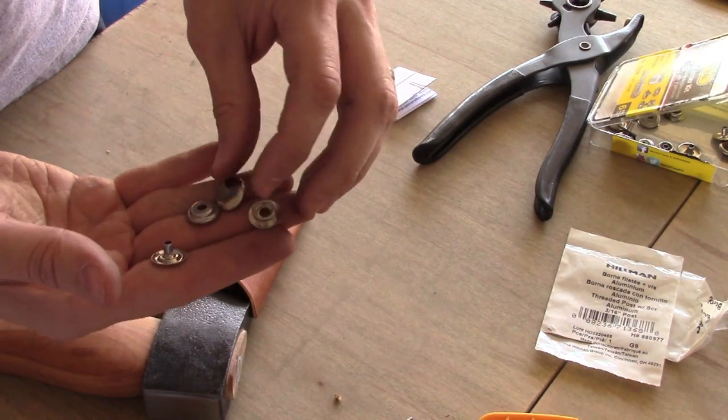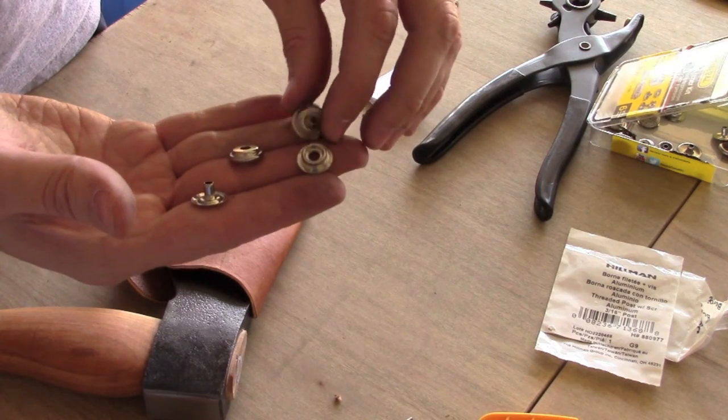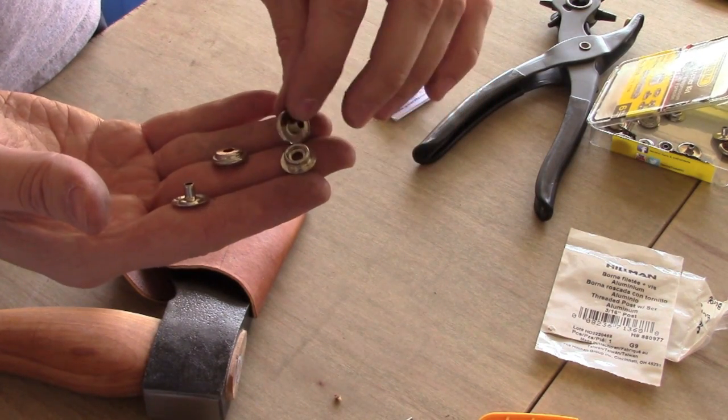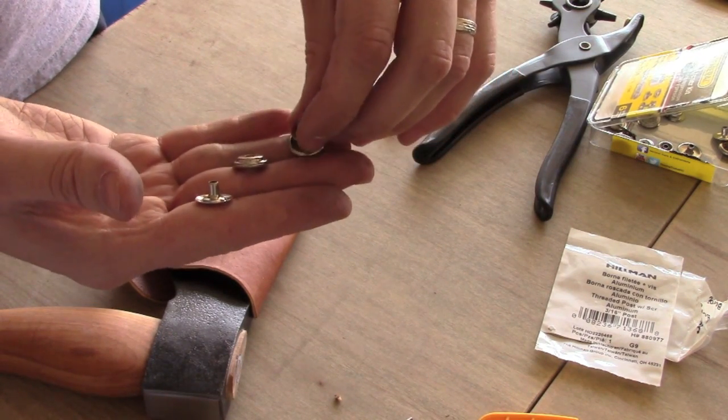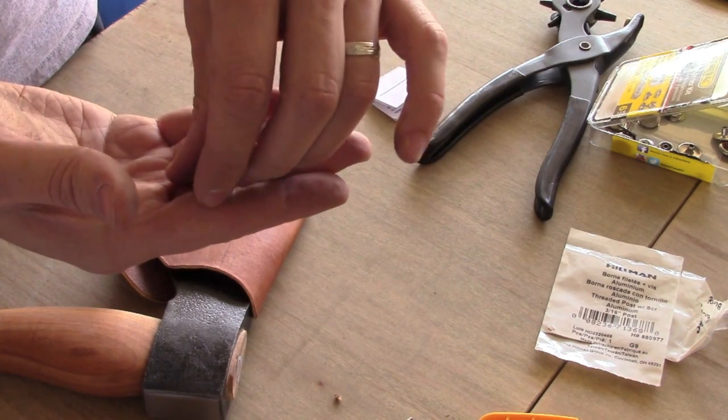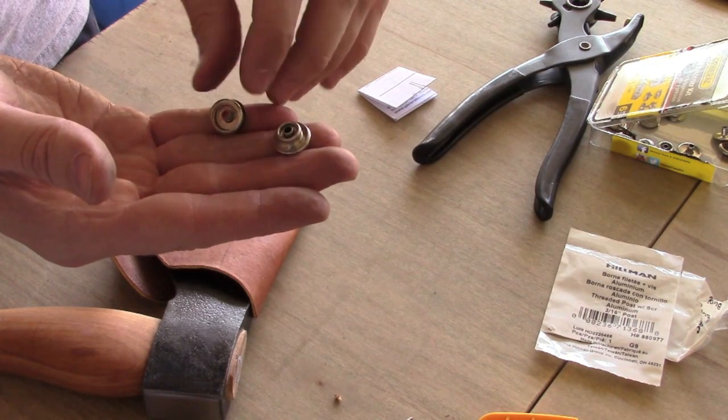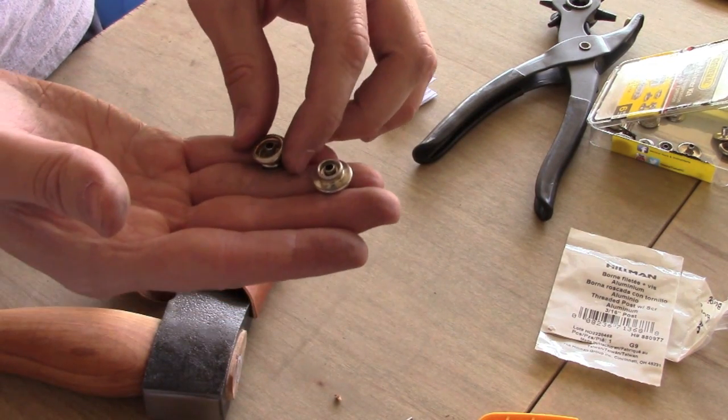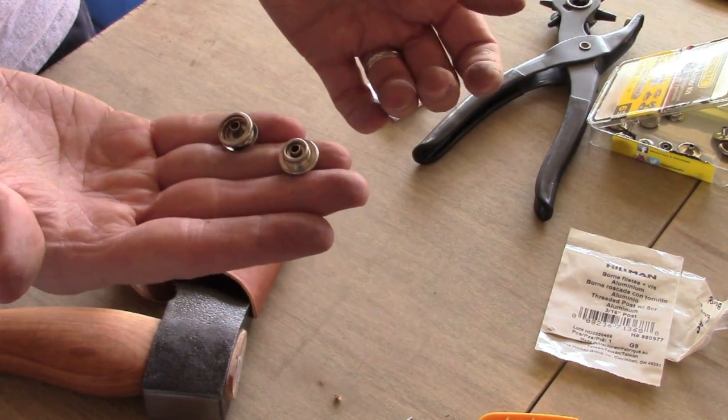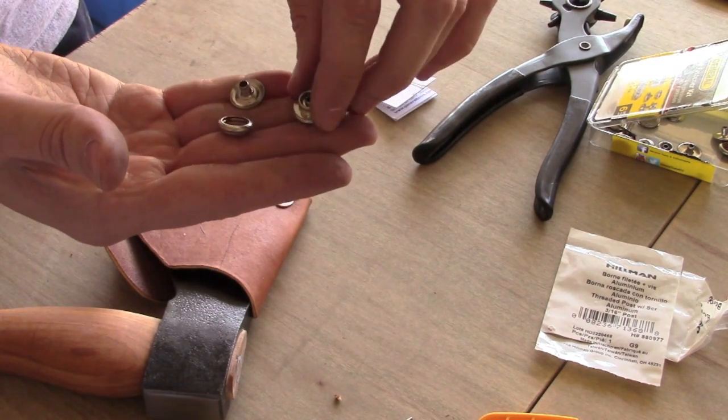You have four parts on setting a snap. There's that top button, the bottom portion. I'm not exactly sure the terminology for all of these, but obviously there's four parts. They squeeze together.